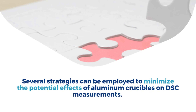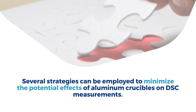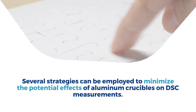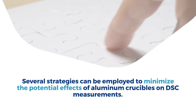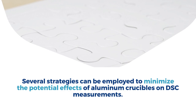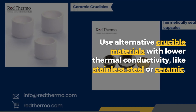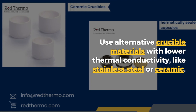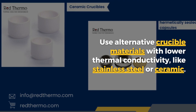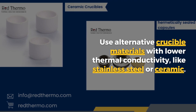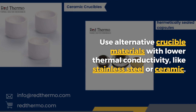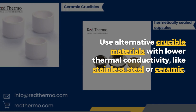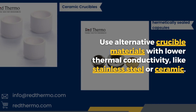Several strategies can be employed to minimize the potential effects of aluminum crucibles on DSC measurements. First, use of alternative crucible materials: choosing crucibles made of materials with lower thermal conductivity, such as stainless steel or ceramic, can help reduce heat transfer effects and maintain the accuracy of DSC measurements.